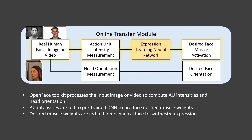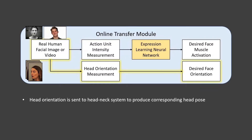The OpenFace toolkit is used to extract AU intensities and head orientation information. The AU intensities are fed to the pre-trained DNN to produce desired face muscle weights, which are then passed to the biomechanical face model to synthesize a corresponding expression. The head orientation information is sent to the head-neck system to produce the corresponding head pose.